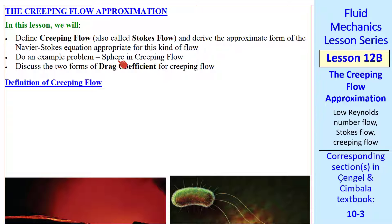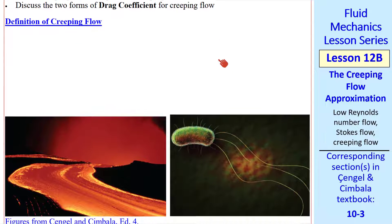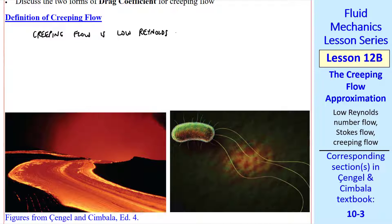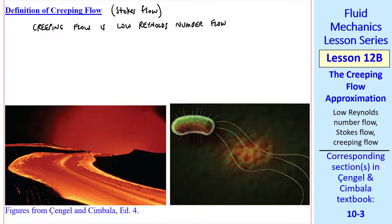I'll do an example of a sphere in creeping flow, and I'll discuss two different forms of the drag coefficient. First a definition of creeping flow. Creeping flow is low Reynolds number flow. It's also called Stokes flow in honor of Stokes, the same Stokes of the Navier-Stokes equation. What we mean by low Reynolds number flow is that the Reynolds number is very small compared to 1.